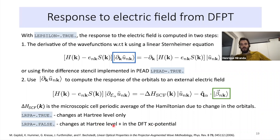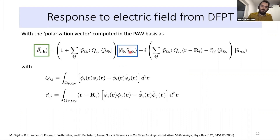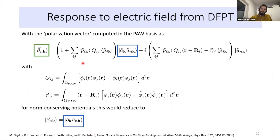The second step is to compute the change of the orbitals with an electric field using another Sternheimer equation involving a polarization vector B. This must be done self-consistently because the density changes with the applied field. Setting LRPA = .TRUE. includes only Hartree-level changes; LRPA = .FALSE. also includes changes of the exchange-correlation potential. The polarization vector B is written in terms of the derivative of the periodic part of the orbital plus one-center PAW terms.